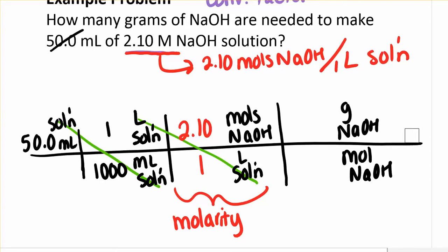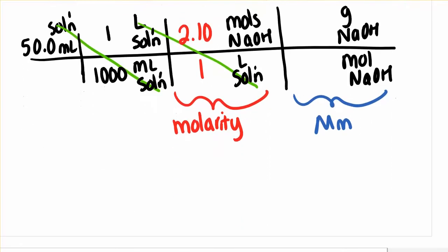Do you remember how we would do that? We're going to use the molar mass. The molar mass of sodium hydroxide, remember we look on the periodic table and we add up the numbers.